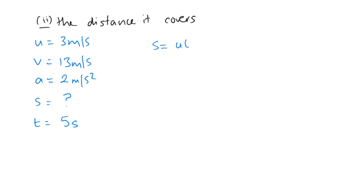I'm going to use S equals UT plus a half AT squared. Now, you could also use S equals a half upon U plus V times T. I've decided not to use that because the V is the one I've calculated myself in part 1. So just in case I made a mistake, I'm not going to use this one here. I'm going to use the S equals UT plus a half AT squared.